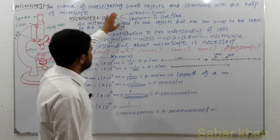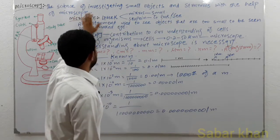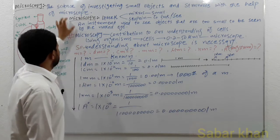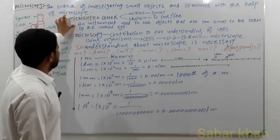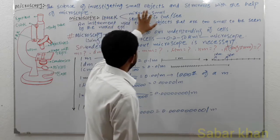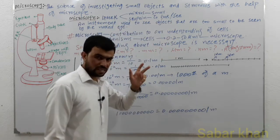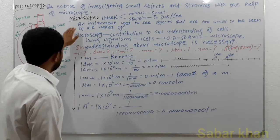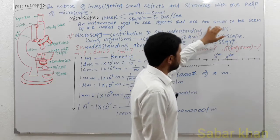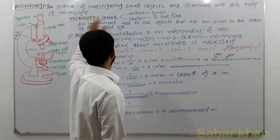The science of investigating small objects and structures with the help of a microscope is known as microscopy. So what is a microscope? The word microscope is taken from the Greek language. Micros means small and scopio means to look or to see. So an instrument used to see objects that are too small to be seen by the naked eye is known as a microscope.